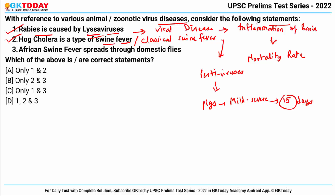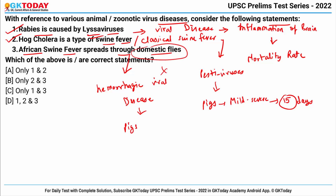Statement three says African swine fever spreads through domestic flies. Actually, African swine fever is a hemorrhagic viral disease affecting pigs, but it is not caused by domestic flies — rather it is caused by ASFV (African Swine Fever Virus), which is transmitted through ticks. So this is wrong and the correct answer becomes only statements one and two.